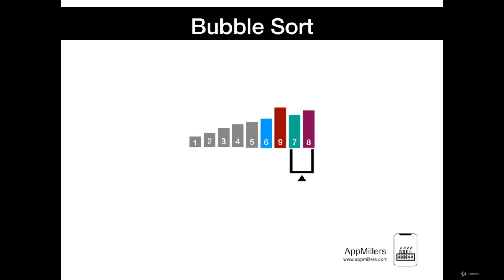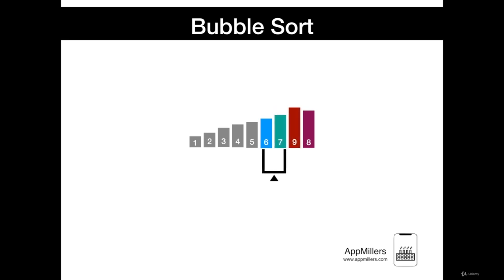Then again we move to the right. We compare 7 and 8 — no swap will occur. But 7 is less than 9, so we will swap the numbers. Continuing to the left, 6 is already fully sorted.